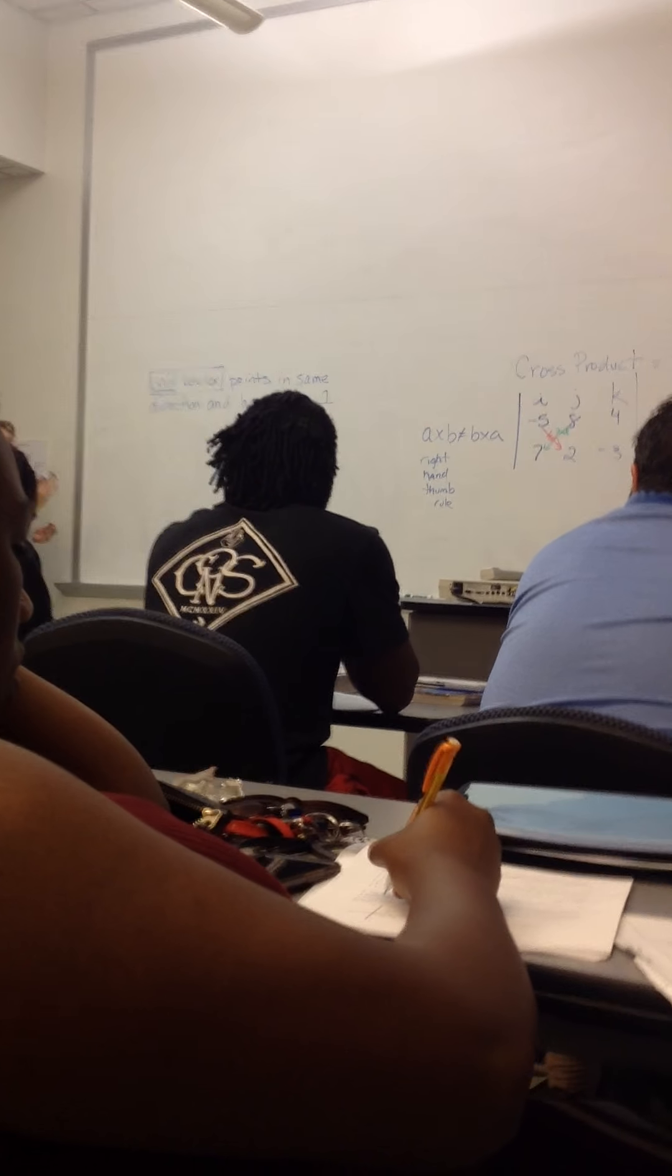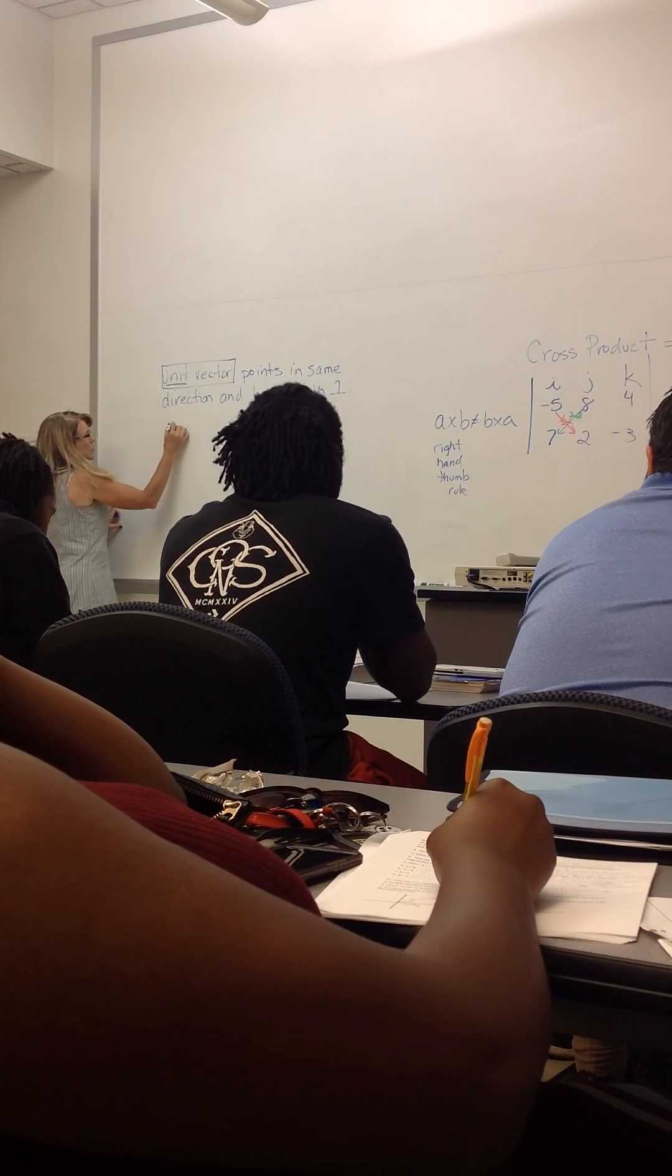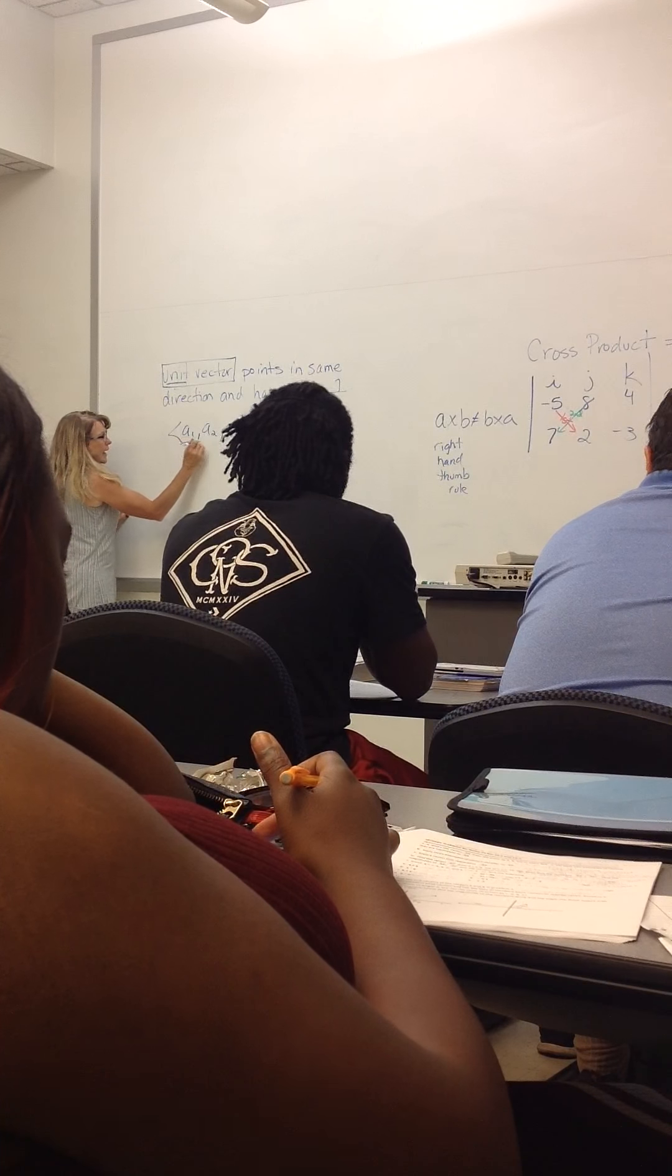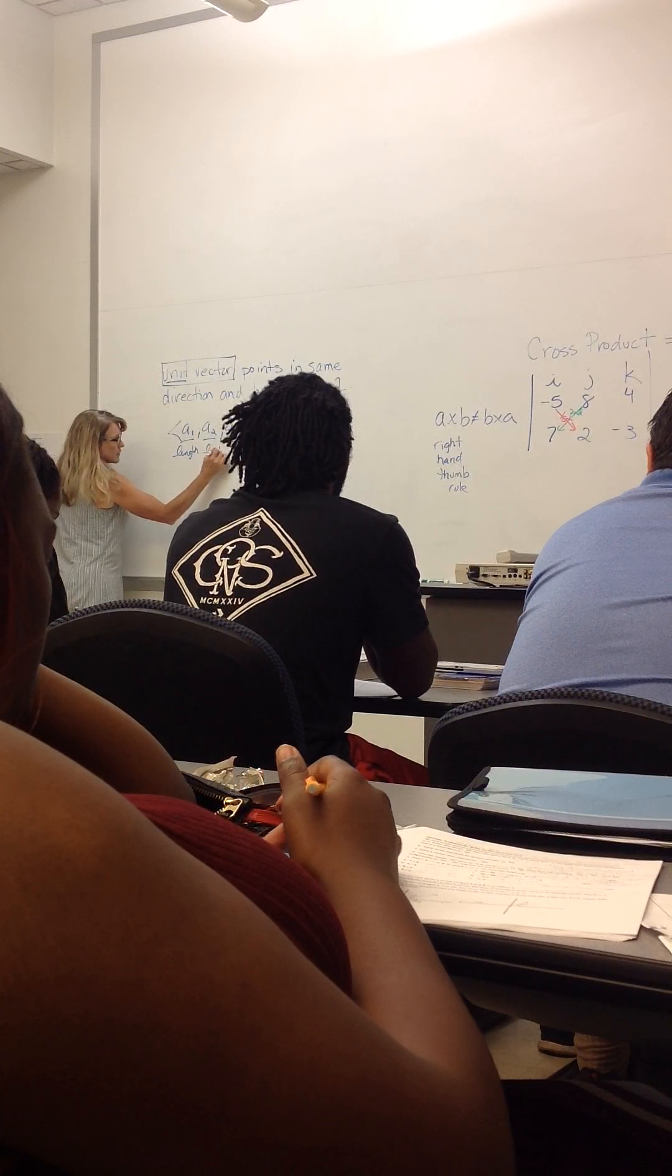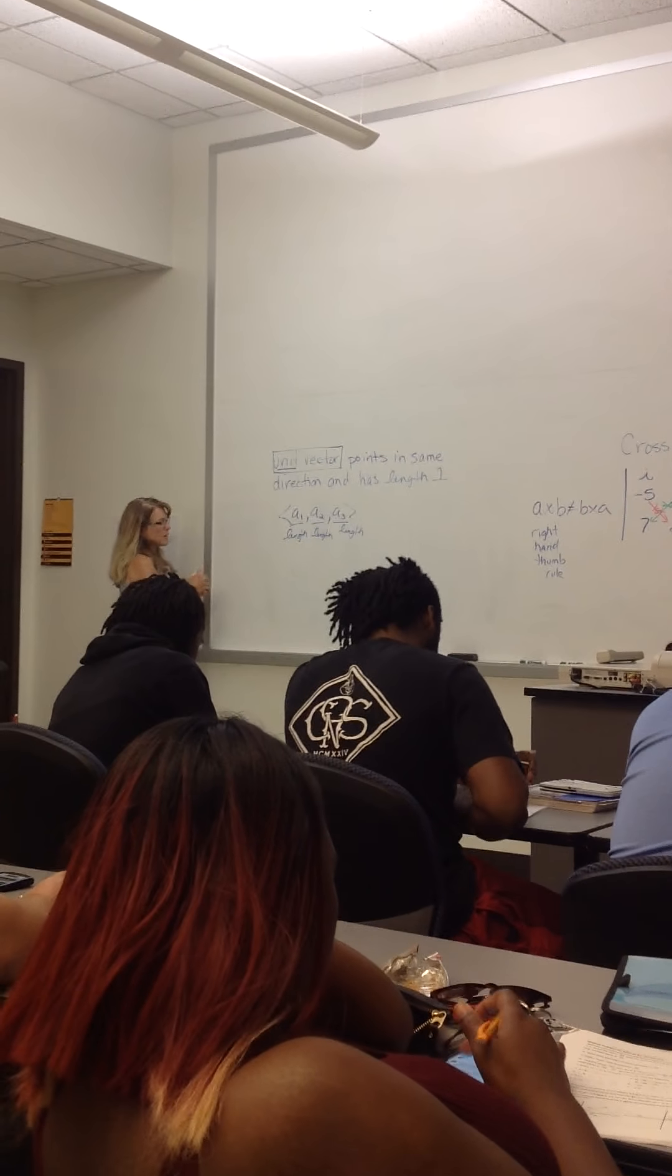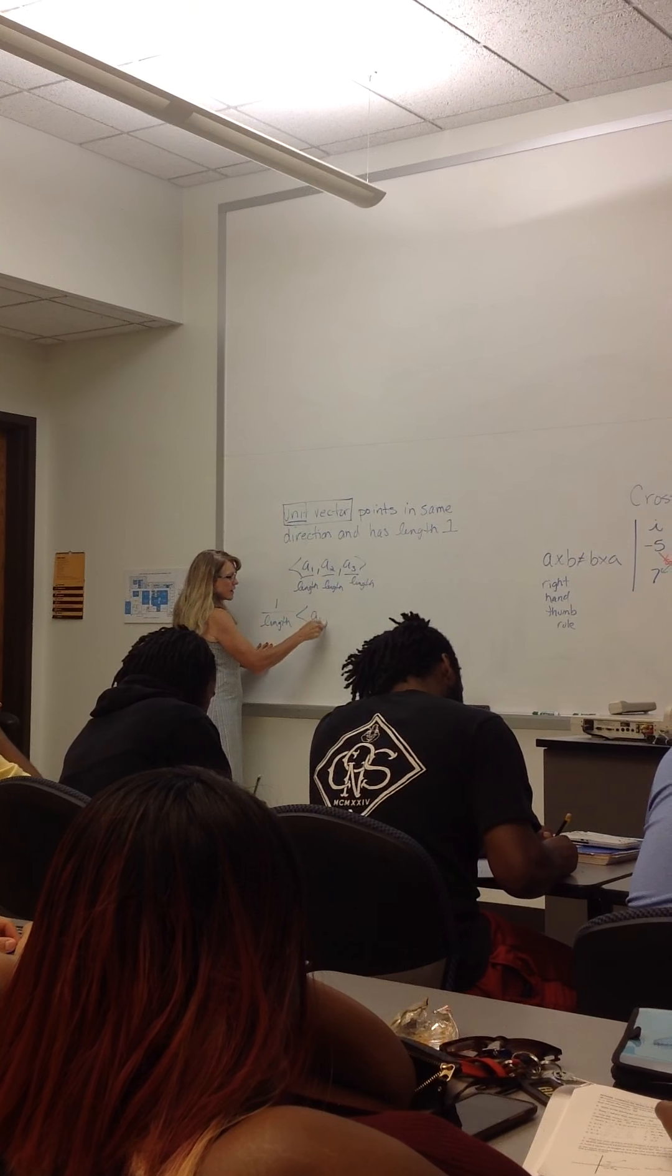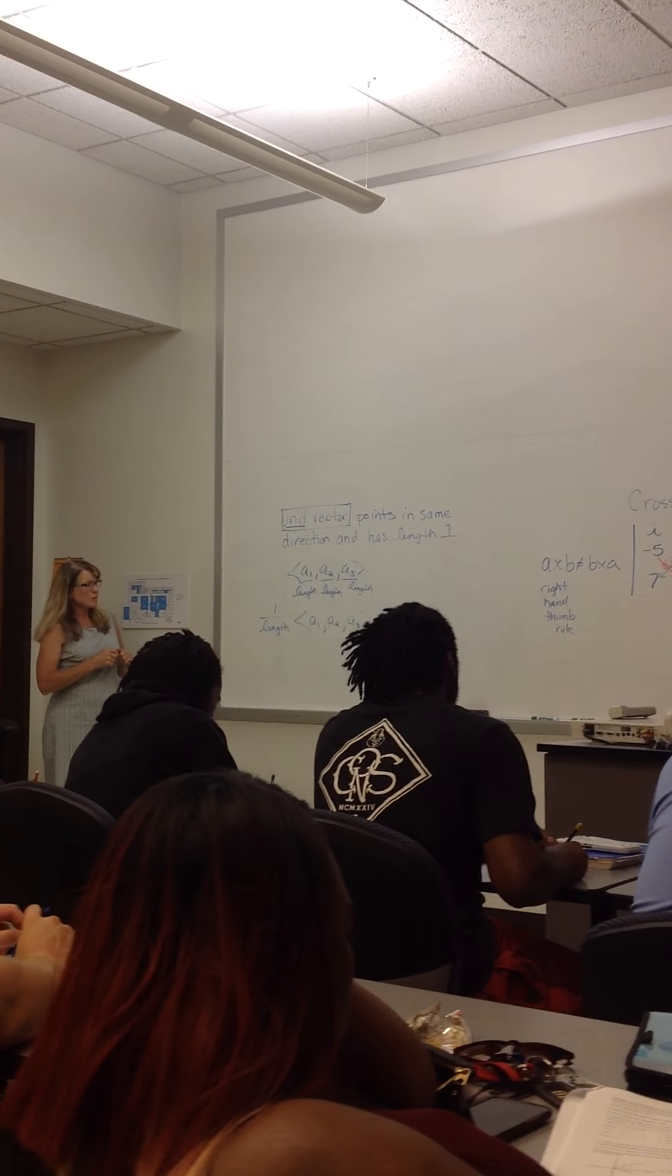What you do to find a unit vector is you take your vector, here's my generic vector, and you divide each of the components by the length of the vector. Each component gets divided by the length of the vector. You sometimes will see the textbook just write 1 over the length on the outside and express the unit vector that way.